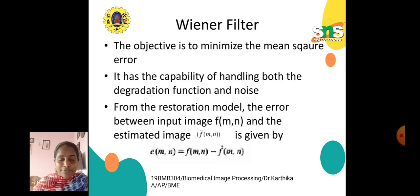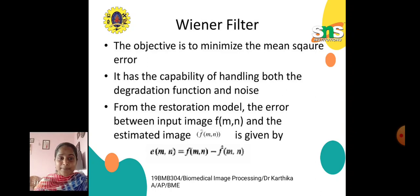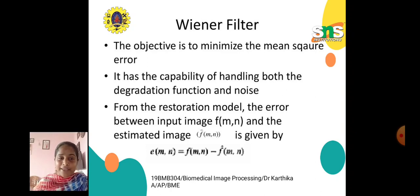The main objective of the Wiener filter is to minimize the mean square error. It has the capability of handling both the degradation function and noise. From the restoration model, the error between the input image f(m,n) and the estimated image f-cap(m,n) is given by e(m,n) = f(m,n) minus f-cap(m,n).